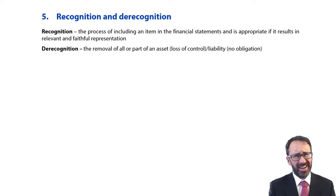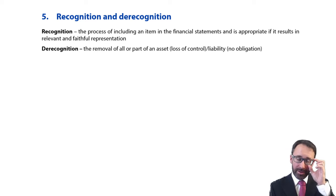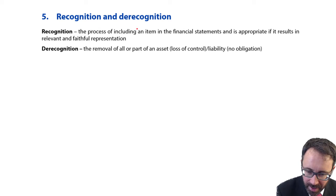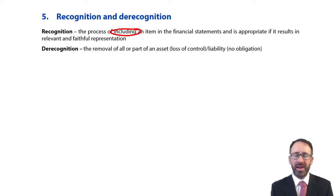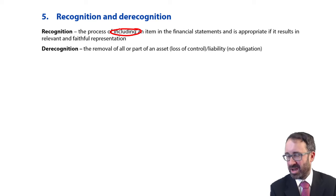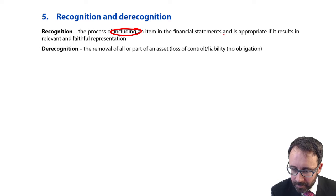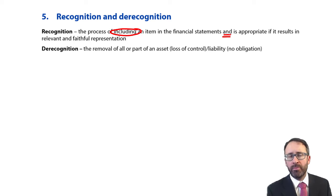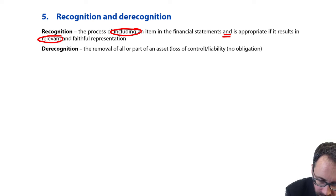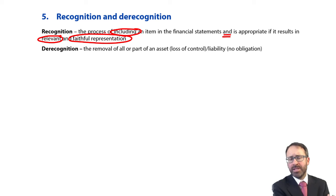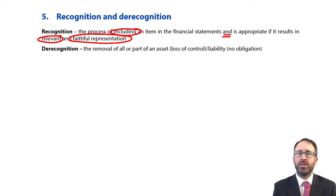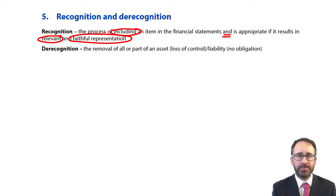The recognition criteria is different from what we had previously. Now it says that the recognition criteria is about including it in the financial statements. That makes sense, doesn't it? Surely that's what recognising is all about. And it's only appropriate — it can only be included — if it results in relevant and faithful representation. That takes us back to the qualitative characteristics of relevance and faithful representation.